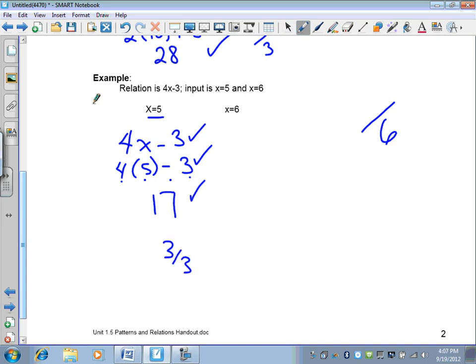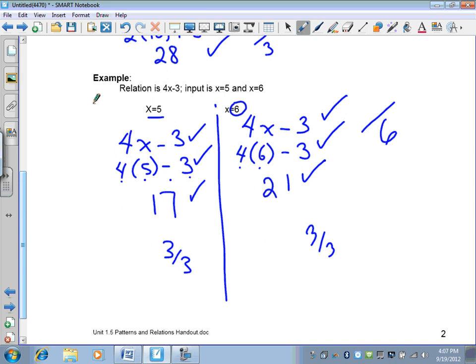The next one is very similar. We're going to use the same relation, 4x-3. But in this case, it's not a 5, it's actually a 6. So my substitution is going to use a 6, not the 5. 4 times 6 is 24, and 24 subtract 3 is 21. Relation, substitution, answer. 3 out of 3. So if I was doing this, I'd give myself 6 out of 6.